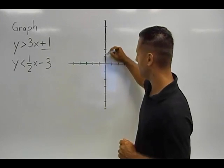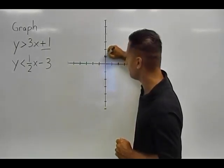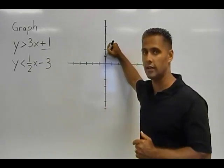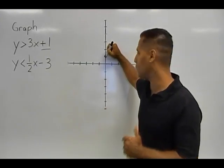So we find positive 1 on our y axis and we make a point at that location because we know that the line is going to pass through that y intercept.